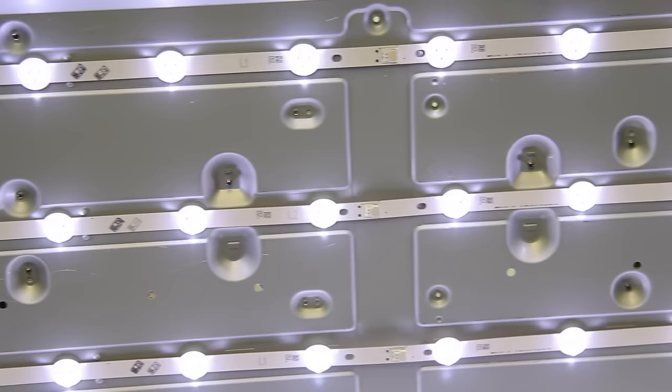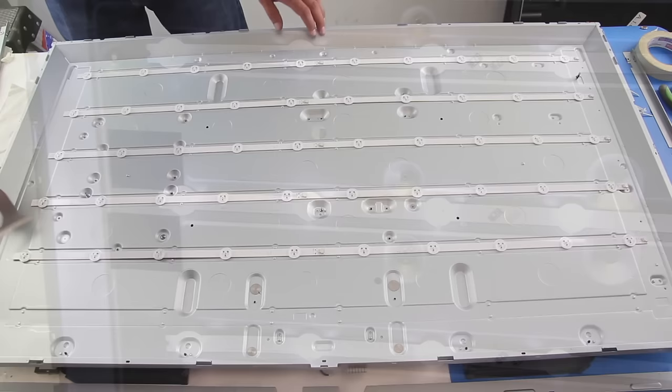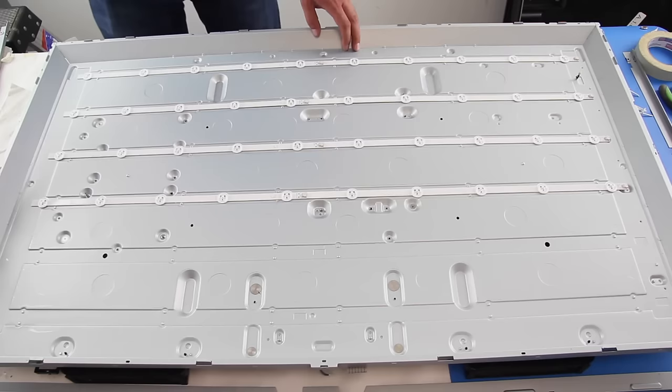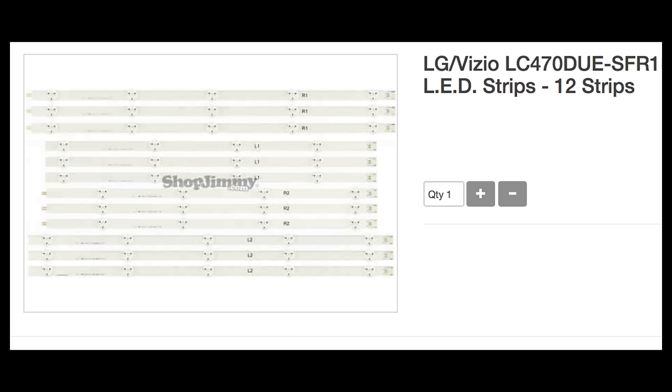There are two recommended ways to troubleshoot and replace. The first is to simply order all new LED strips for your TV and replace them. This is the least time-consuming way to replace the LEDs and fix your TV.